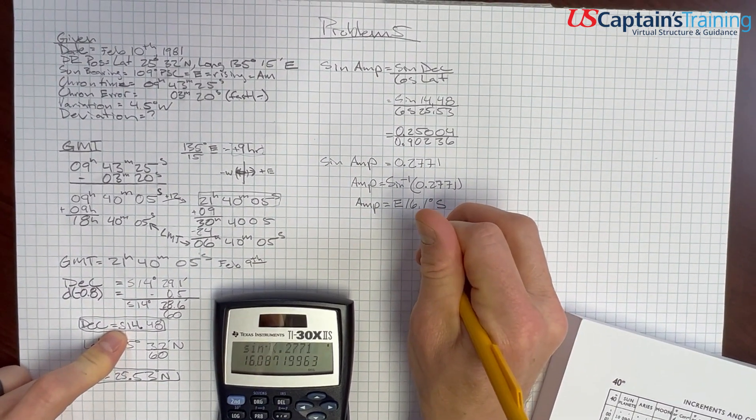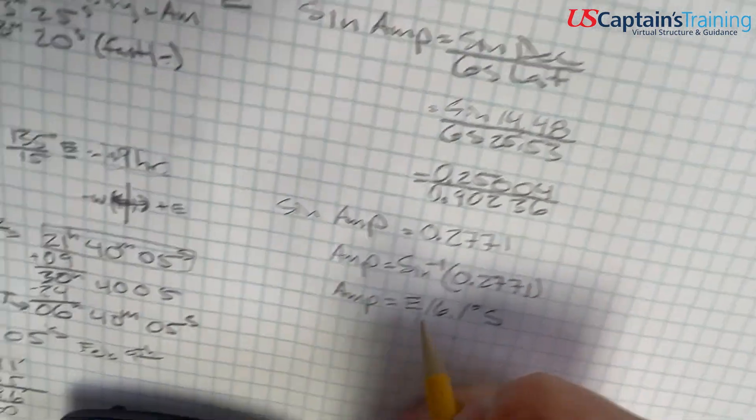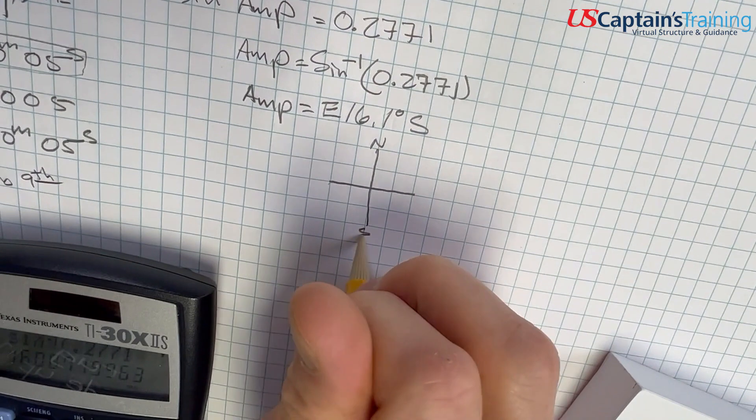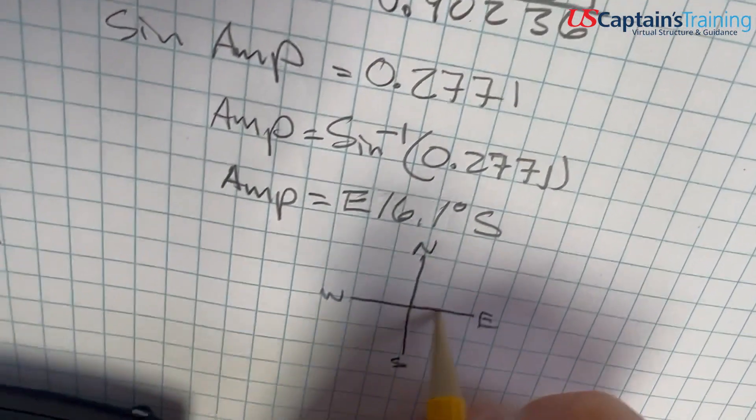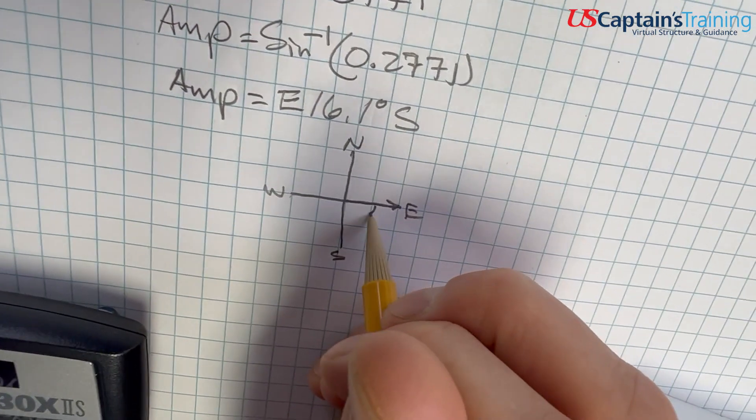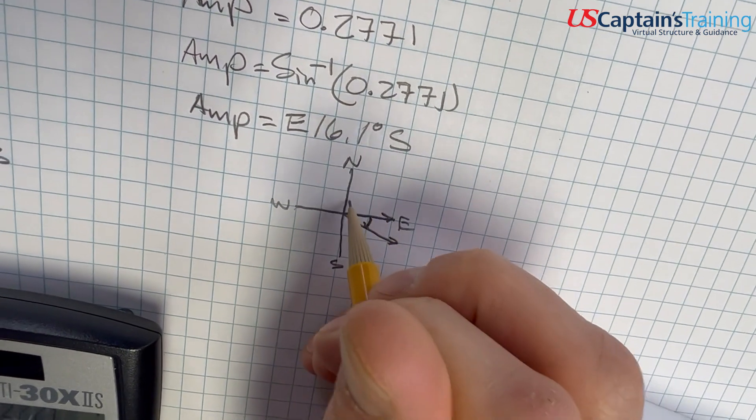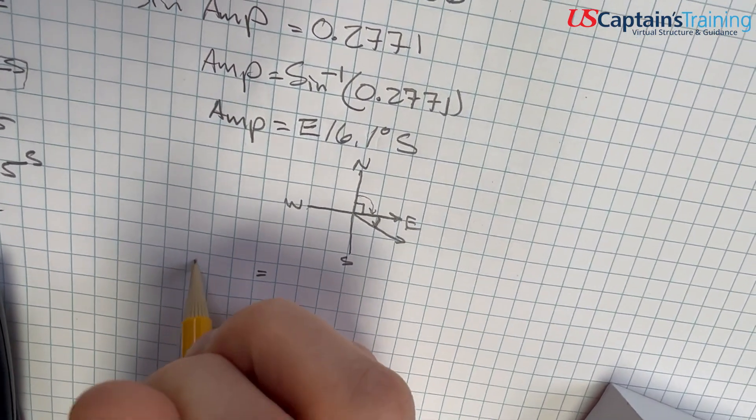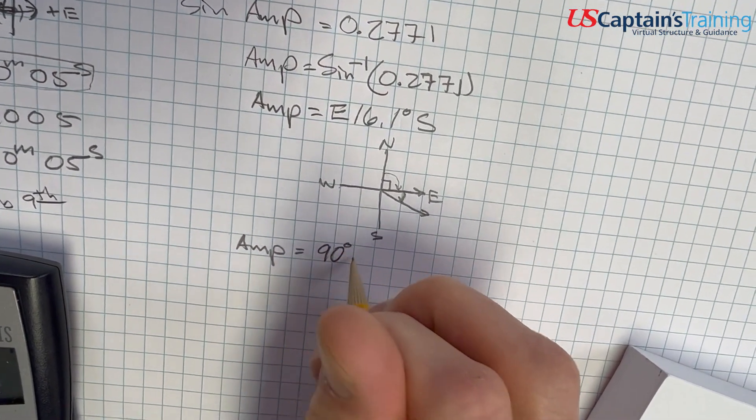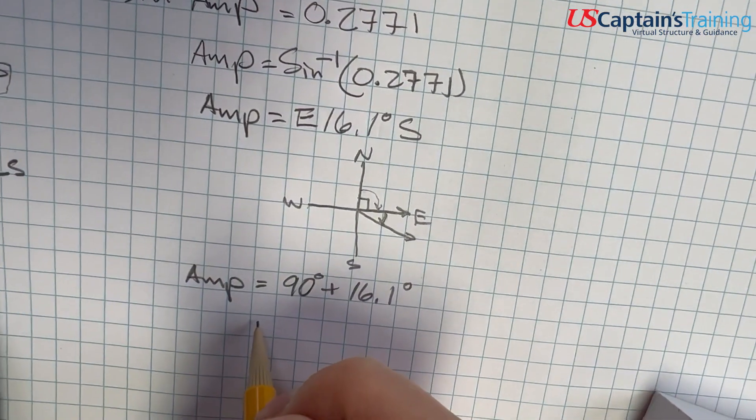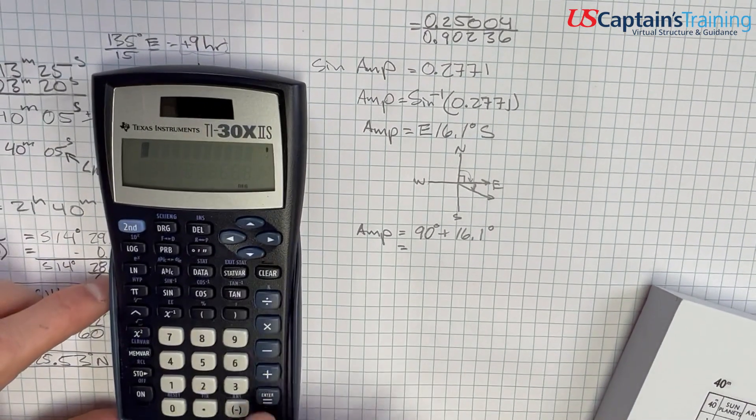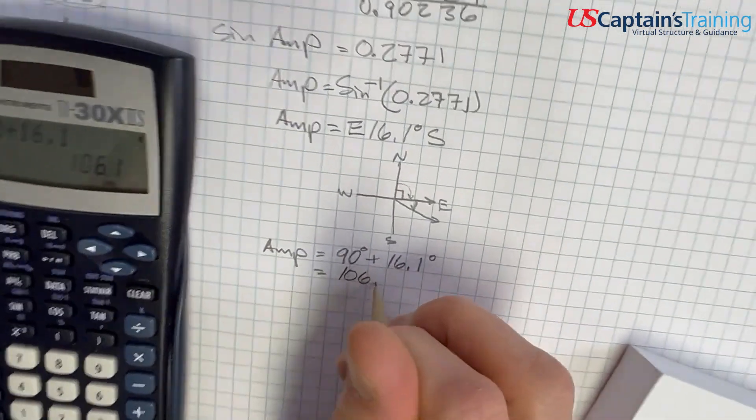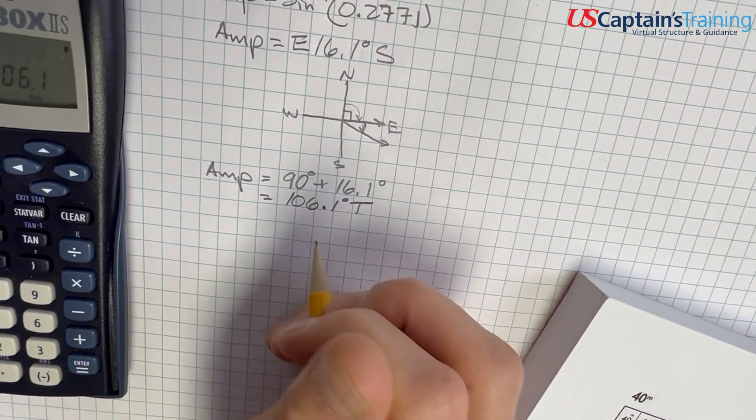And so now we need to figure out our degrees from north. These are degrees south of east. So I just like to graph this thing out: north, south, east, and west. So now we went east first. We went this way. And we went south 16 degrees. So we're down here, 16 degrees. So we can say 90 degrees plus 16 degrees. So now our amplitude from north equals 90 degrees plus 16.1 degrees. So that equals 106.1 degrees true from north. So now we can correct the compass and calculate deviation.